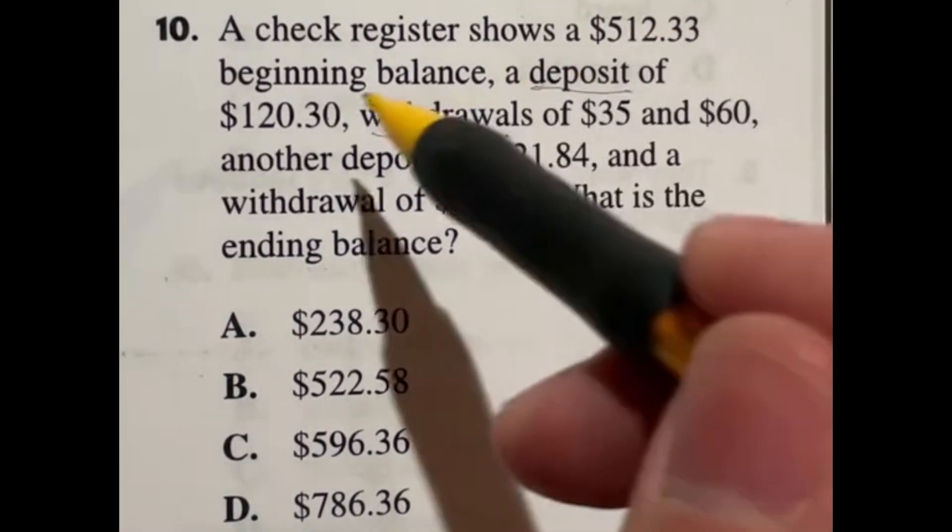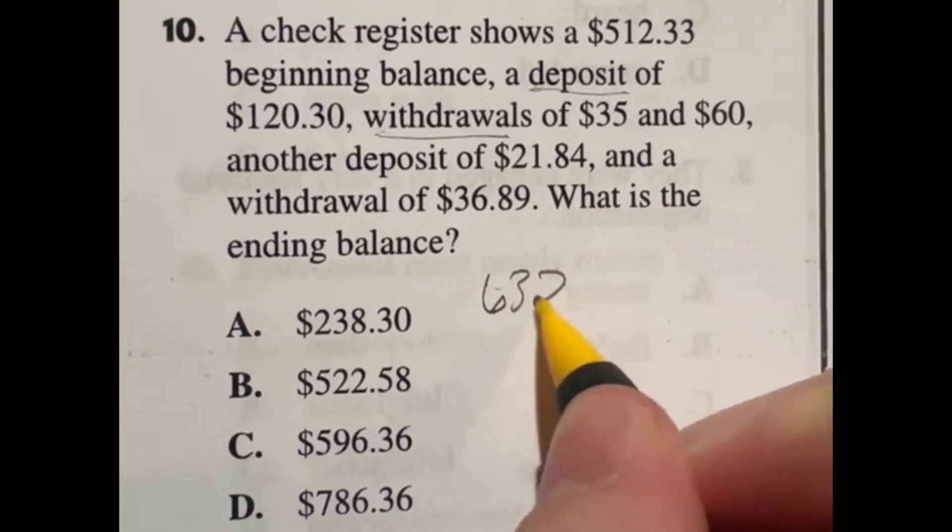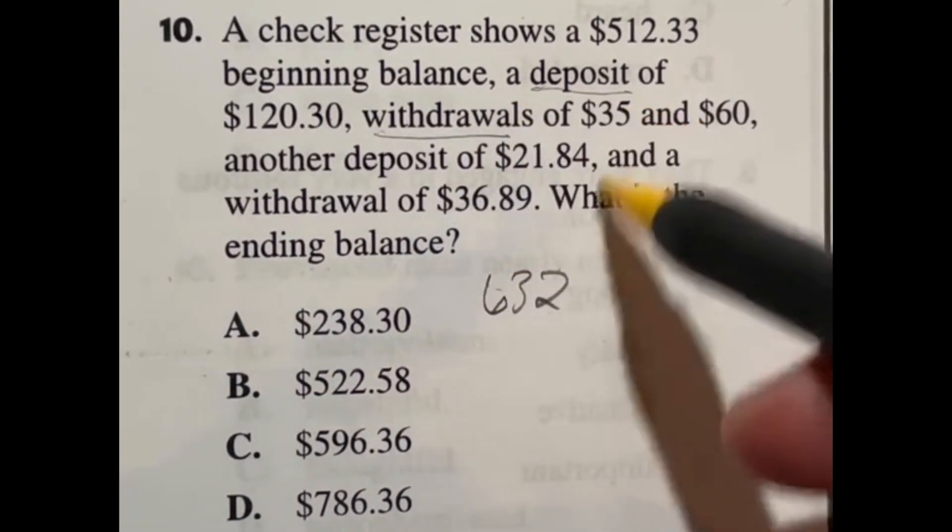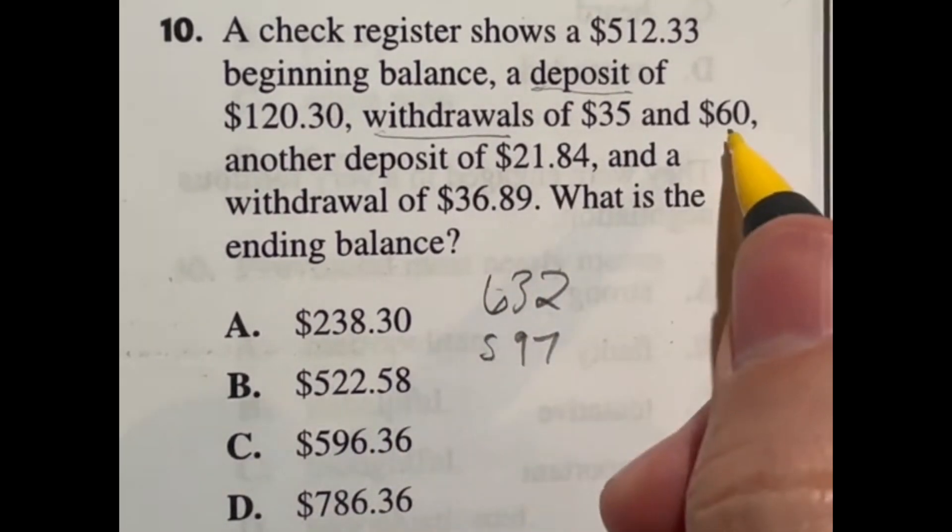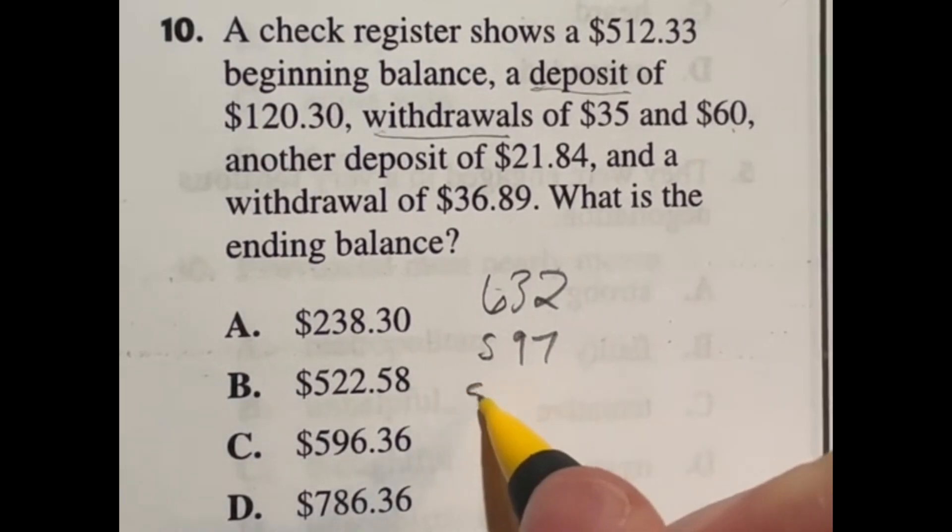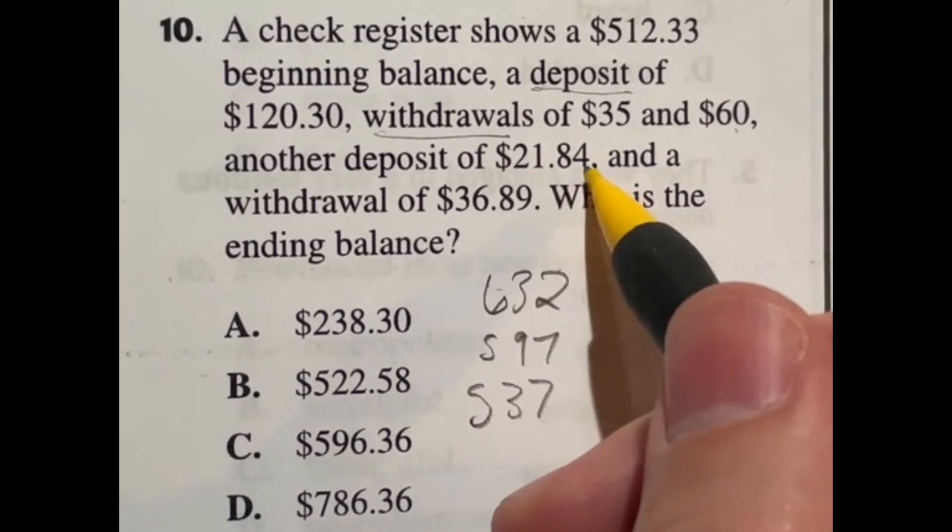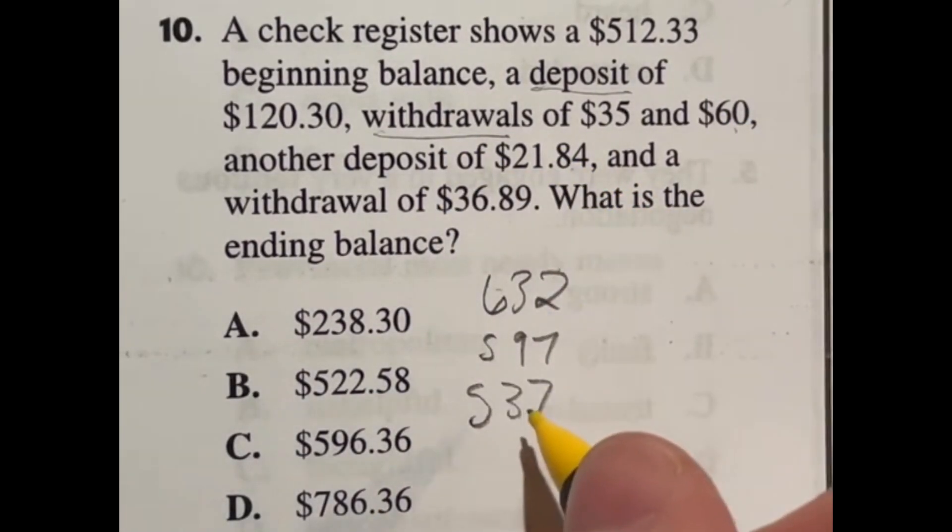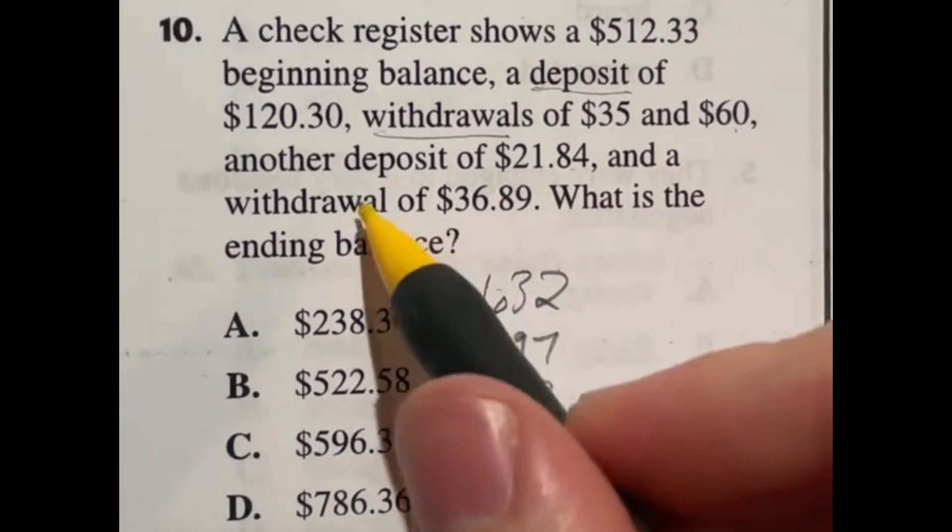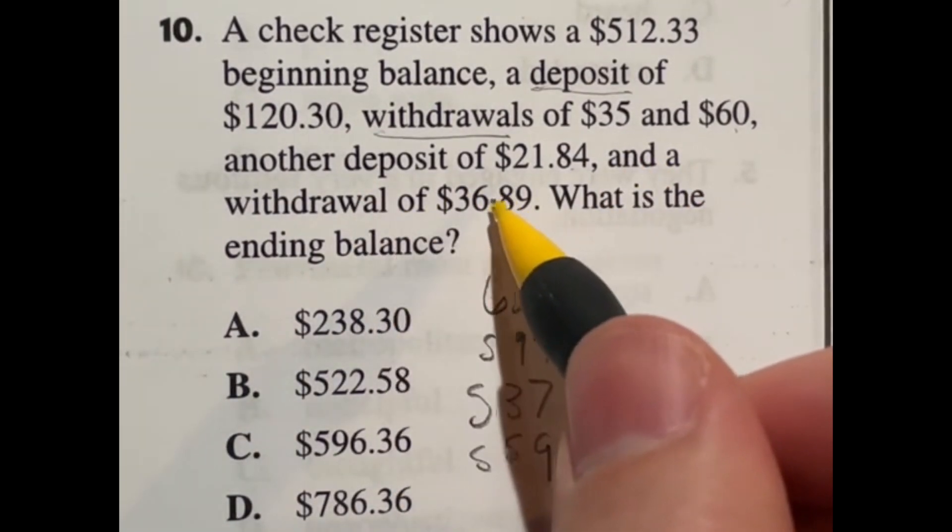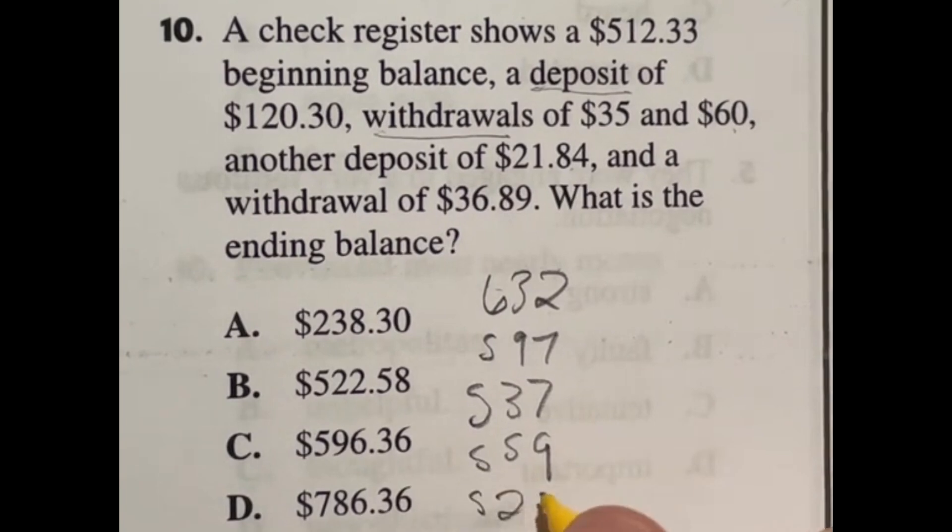Now remember, a deposit is adding to your account and a withdrawal is taking out of the account. So 512 plus that 120 is going to give me about 632, and then we're going to withdraw 35, which is going to bring us down to 597, and then we're going to withdraw another 60, which is going to bring us down to 537. Then we're going to deposit, let's go with 22, round this up because of the eight. So if I add another 22, that's going to give me 559, and then last but not least we're going to withdraw another 37. So that means that we're going to end up around like 522.